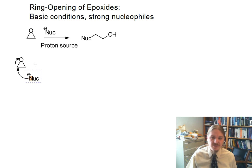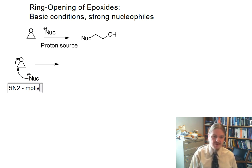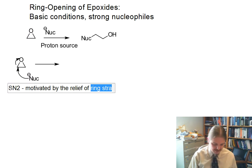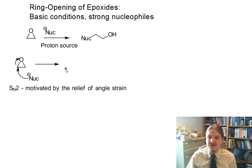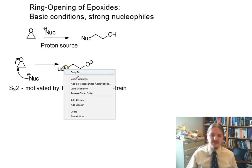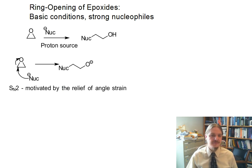The first step involves a nucleophilic attack. This is an SN2 reaction driven by the relief of angle strain. The bond angles in our epoxide are approximately 60 degrees, far away from the ideal 109.5 degrees that a tetrahedral sp3 hybridized carbon would like. There's a lot of angle strain that can be relieved by reaction with the nucleophile.